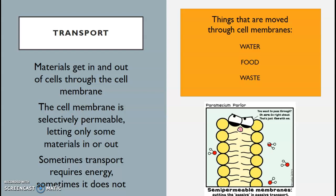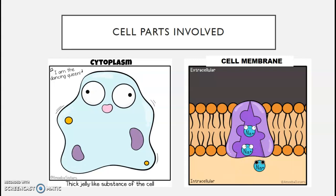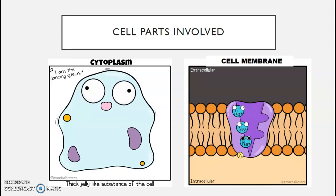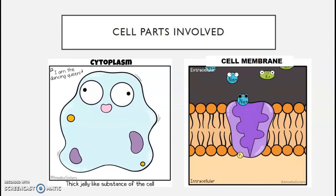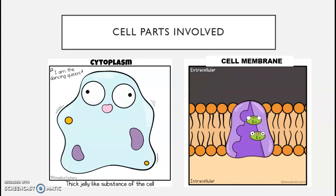The cell membrane is selectively permeable — only some materials can get in or out. The cell membrane is the most important cell part in terms of cell transport, since it is the boundary between the inside and outside of the cell. Once inside the cell, materials can also move around the cytoplasm.